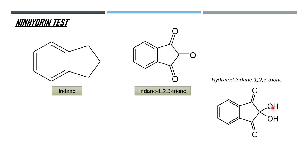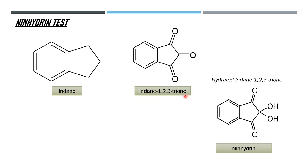This gives two hydroxyl groups on one carbon, which is not very stable. As basic organic chemistry tells us, two hydroxyl groups on one carbon are unstable: a hydrogen from one hydroxyl protonates the other, water is eliminated, and you get back the carbonyl compound. So from indane-1,2,3-trione we arrive at ninhydrin.